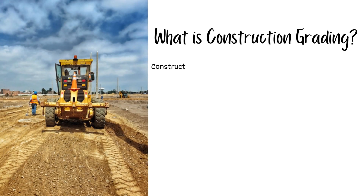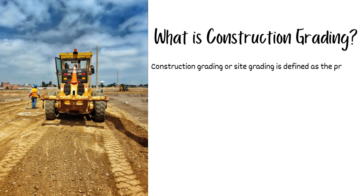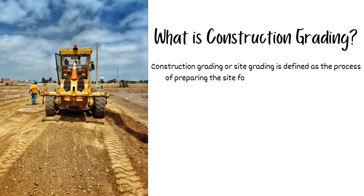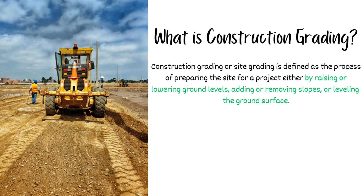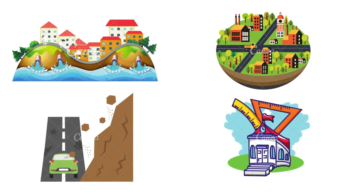What is construction grading? Construction grading or site grading is defined as the process of preparing the site for a project, either by raising or lowering ground levels, adding or removing slopes, or leveling the ground surface. The primary objectives of construction grading include: to provide a proper drainage system for the site, to achieve desired aesthetics, to prevent soil erosion, and to comply with building codes and regulations.